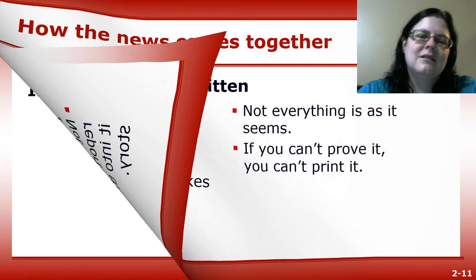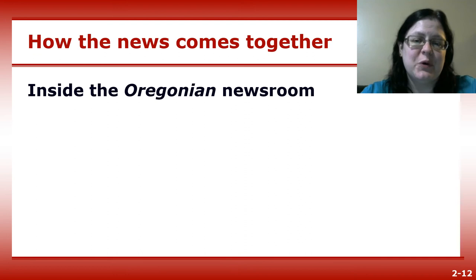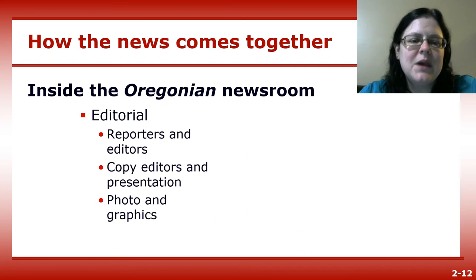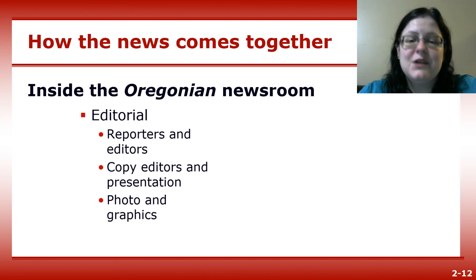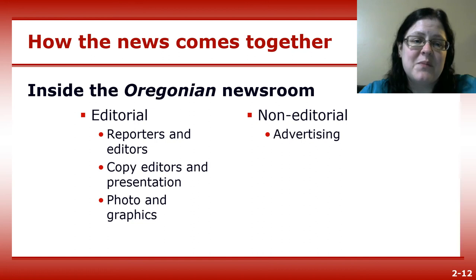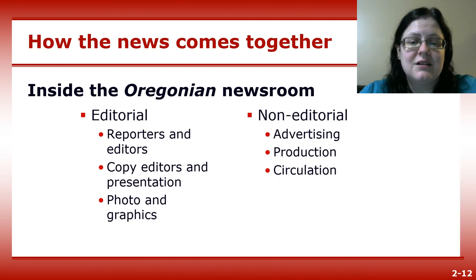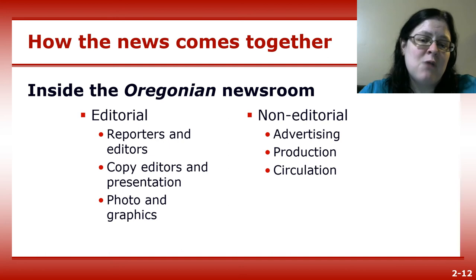Harrower takes us inside the Oregonian newsroom to show us how news comes together. While every newsroom is different, the Oregonian is a great example to learn from. There are four main divisions at a newspaper: editorial — the content, including reporters, editors, copy editors, photographers, and designers; advertising — the sales reps who sell ads; production — those who run the printing press in-house, or the IT department if you print off-site; and circulation — those who deliver the paper every morning, whether to someone's house or to newspaper boxes around town or campus.